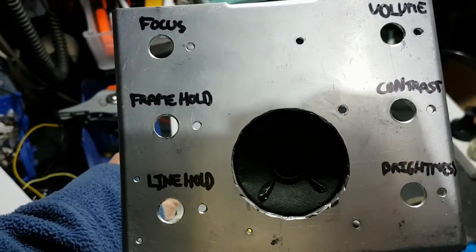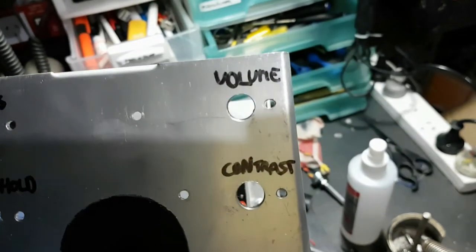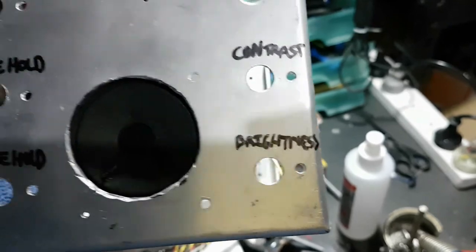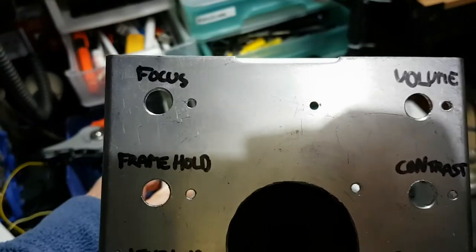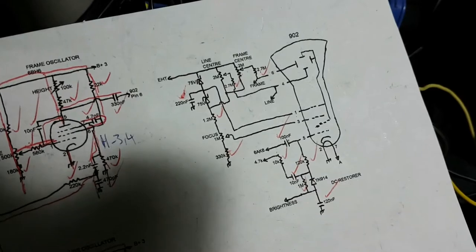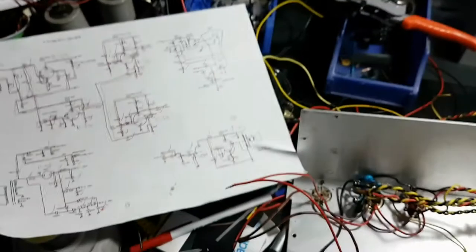I've labeled which pots go where. On the left side I've got the line hold and the frame hold and the focus. On the right side I've got the volume, contrast, and brightness. The brightness and the focus will be going to the tube, the brightness will be going to the power supply section which I haven't yet wired up.